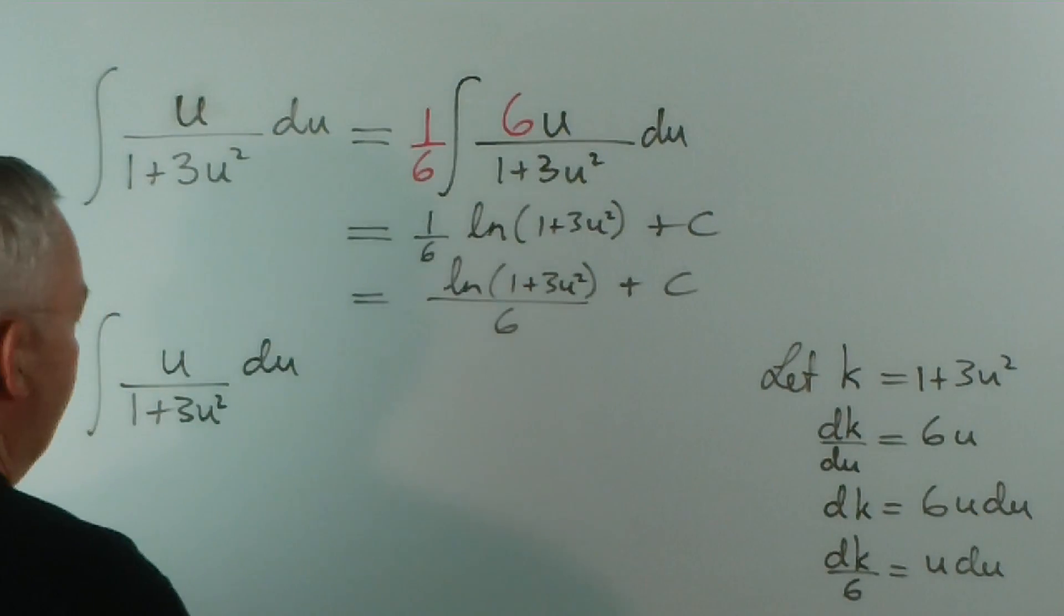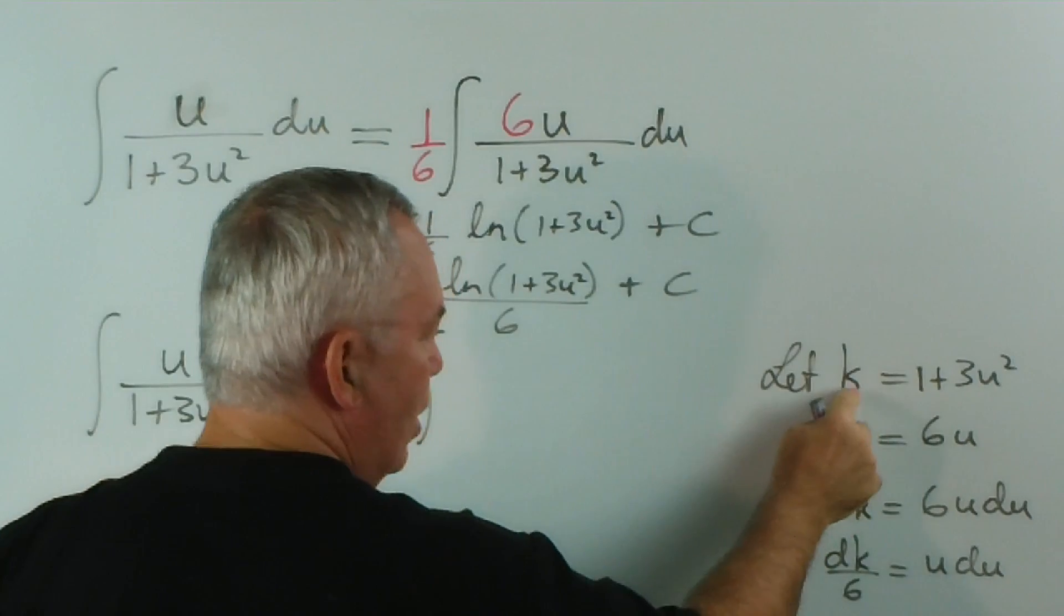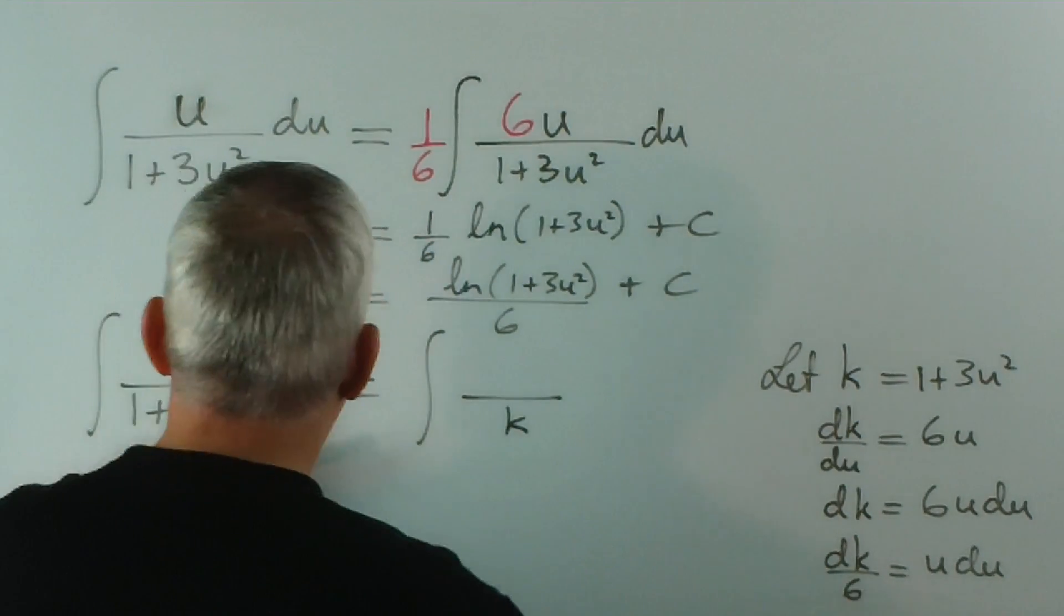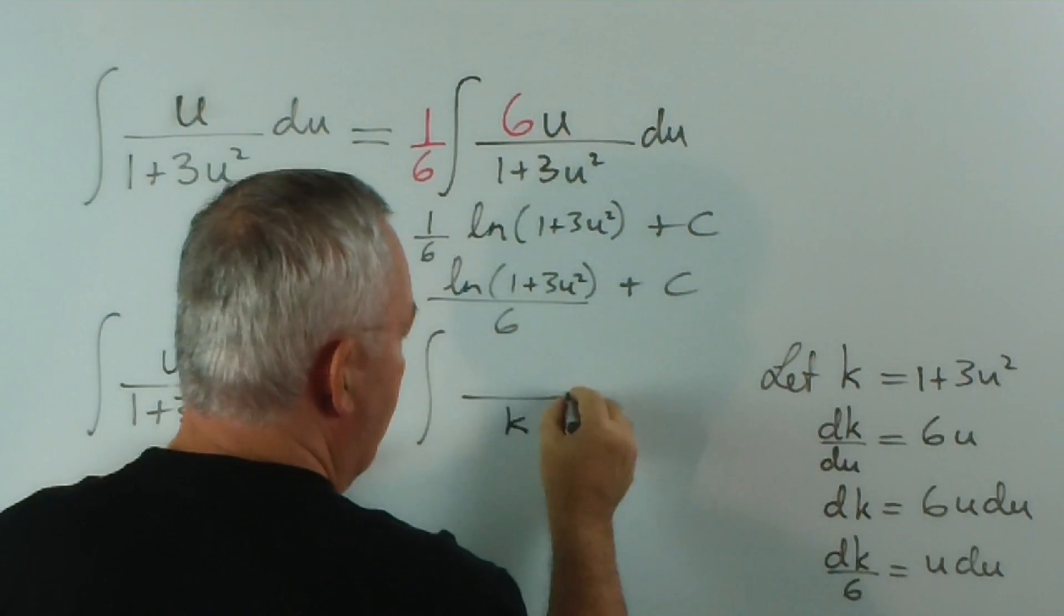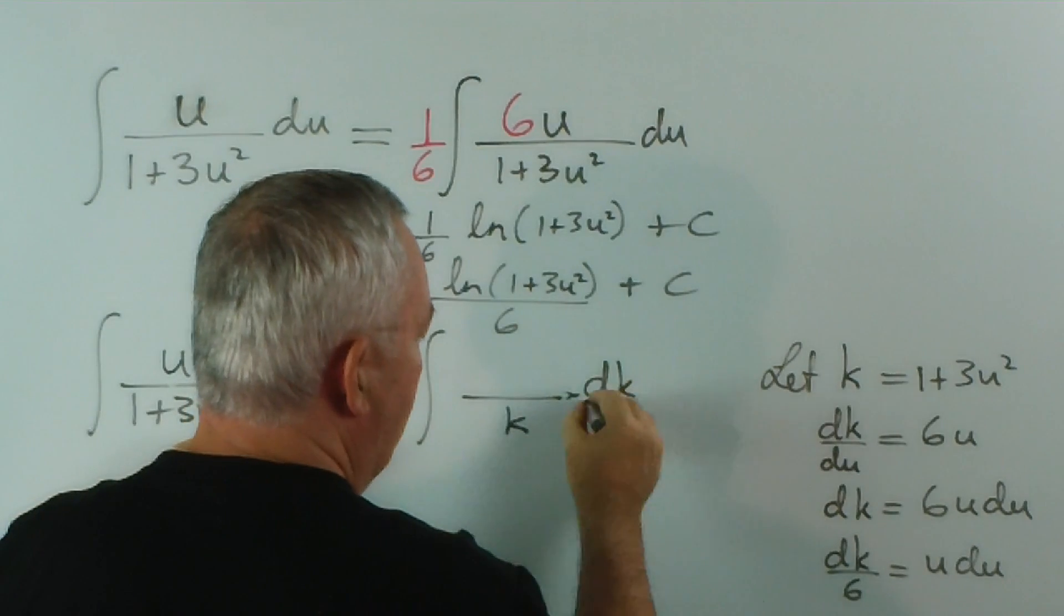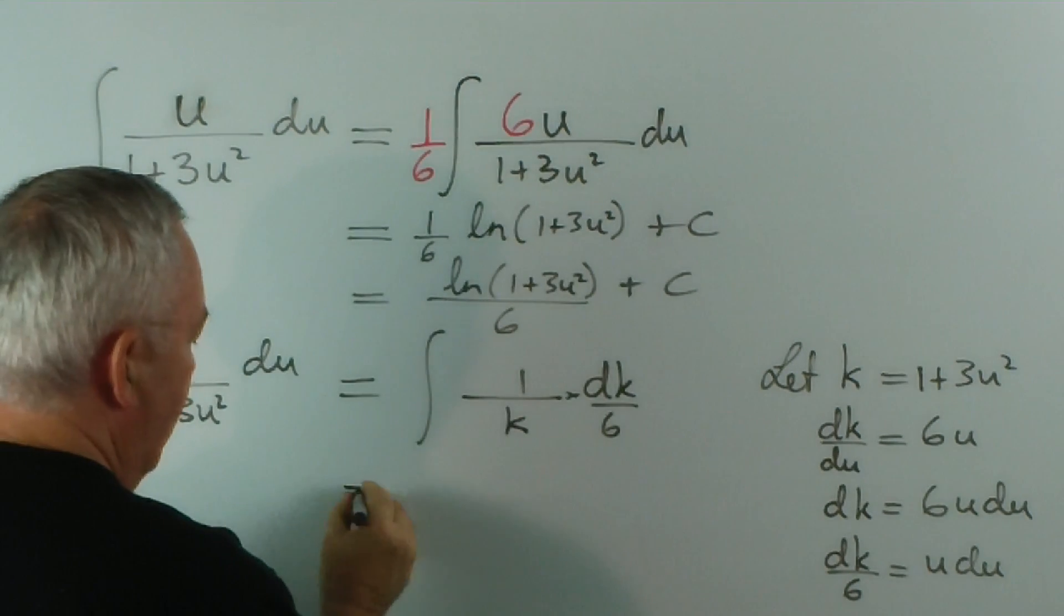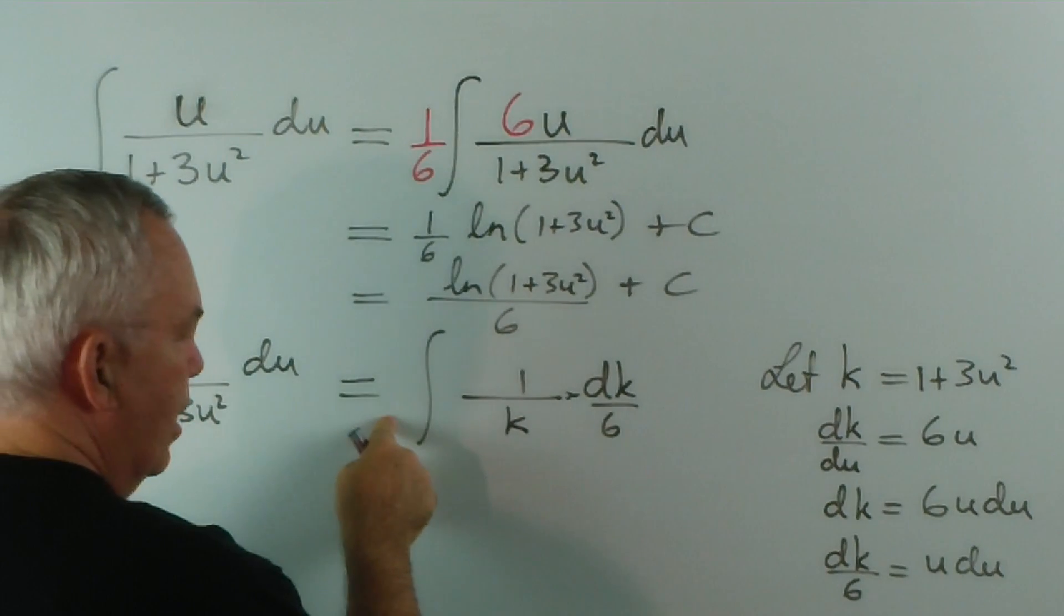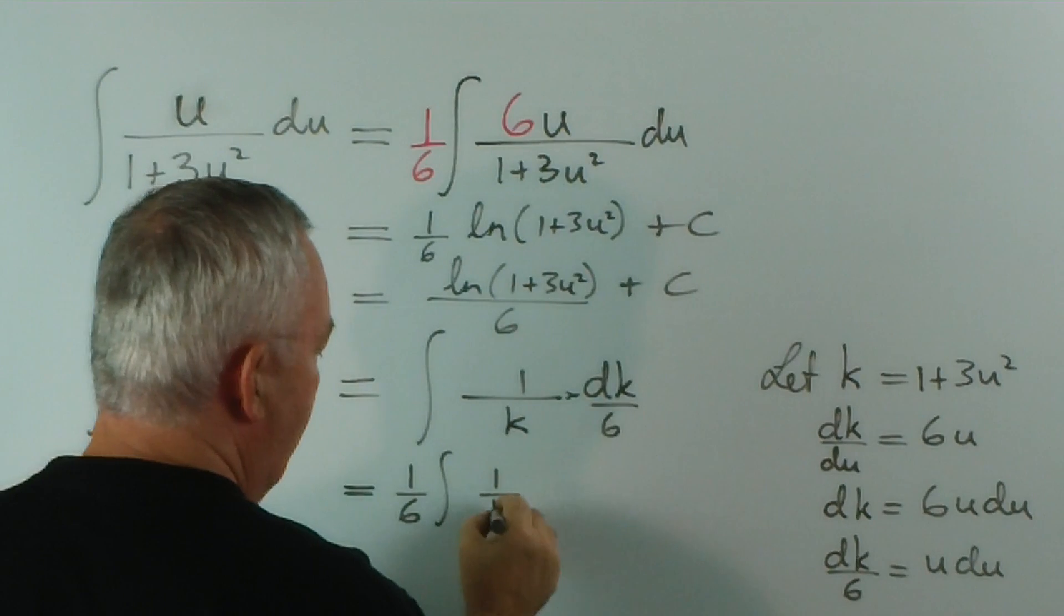And now you notice that we have the integral on the bottom. 1 plus 3u squared can be replaced with k. And the du, sorry, the u du, we have a u on the top as well, u du can be replaced by dk on 6. Now, this is the same as, I can have the 6 here or move the 6 out the front. So, I'll make it 1 sixth the integral of 1 over k dk.